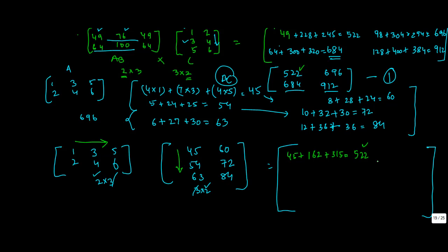Second, 1 into 60, 60, 3 into 70, 210, 216, plus 5 into 84, simple, 420, 480, 680, 696, equals this. Second row, first column, 2 into 45, 90, plus 4 into 54, 216, plus 63 into 6, 360, plus 18, 378. Do the total of these three. What do we get? 684. Check it out for yourself. Again, we've got the third value.